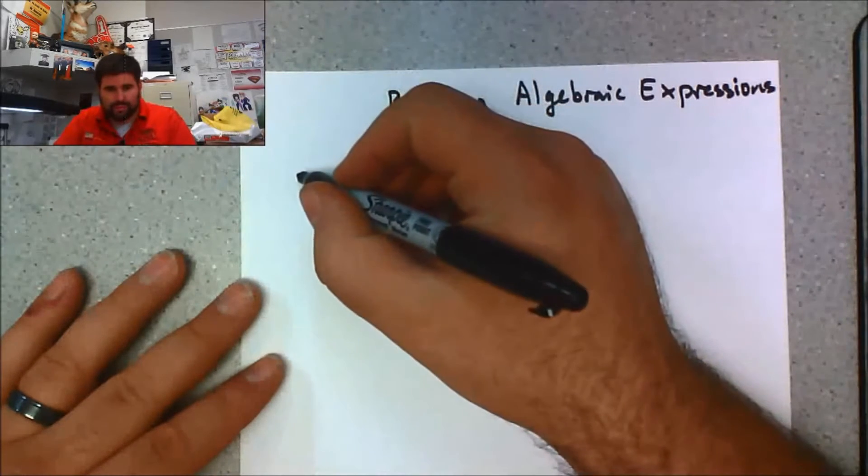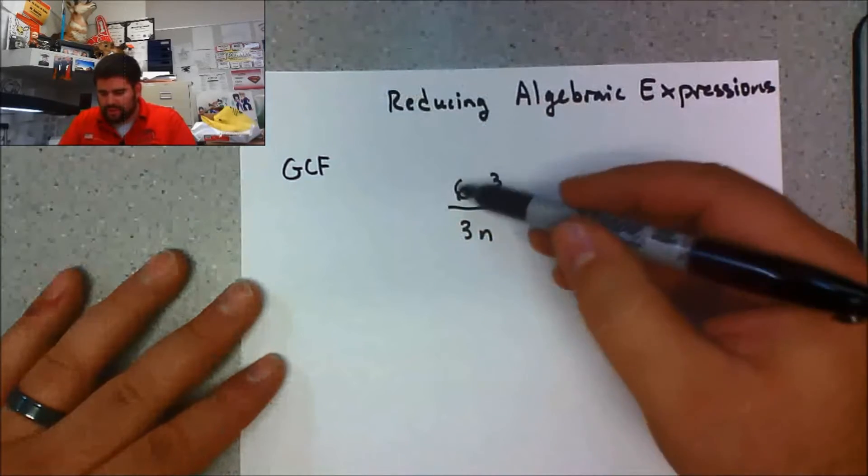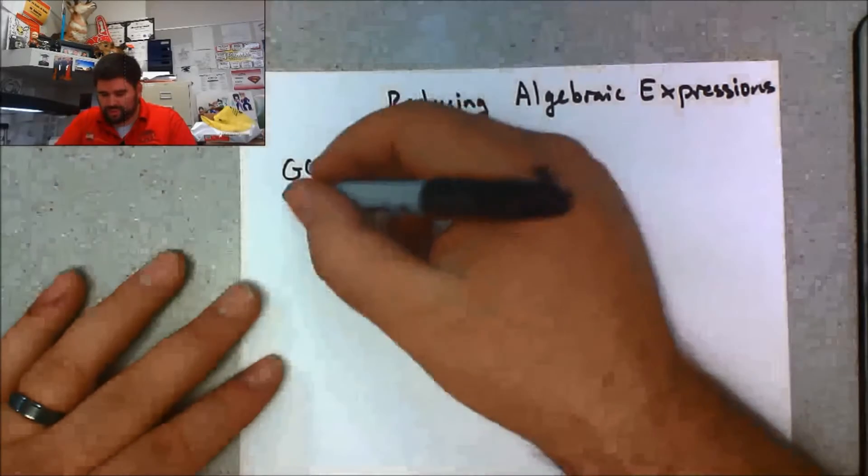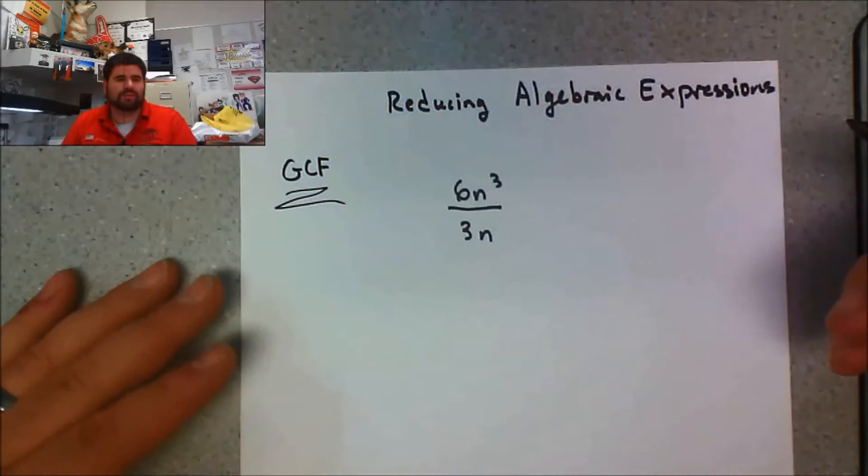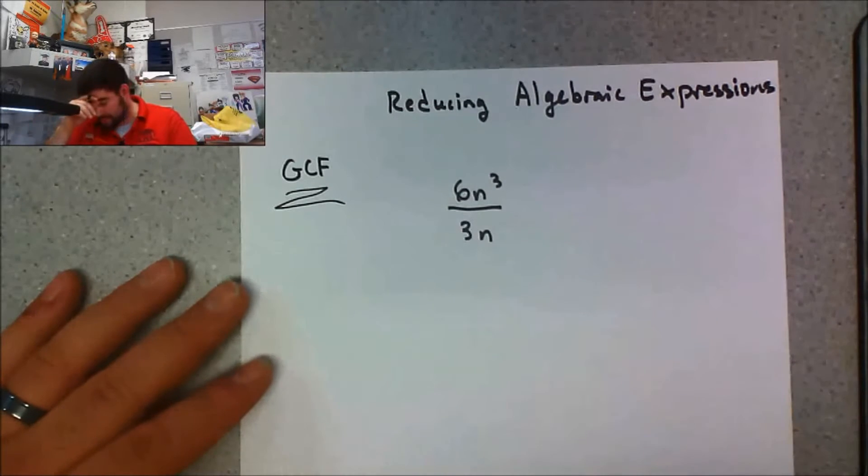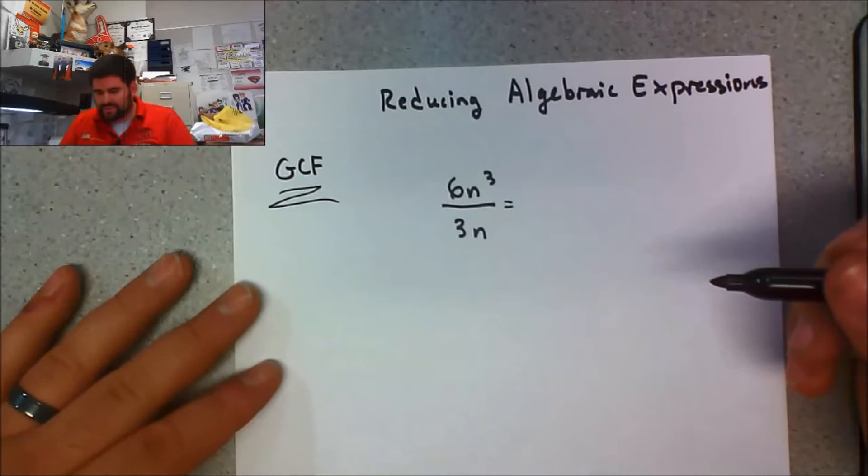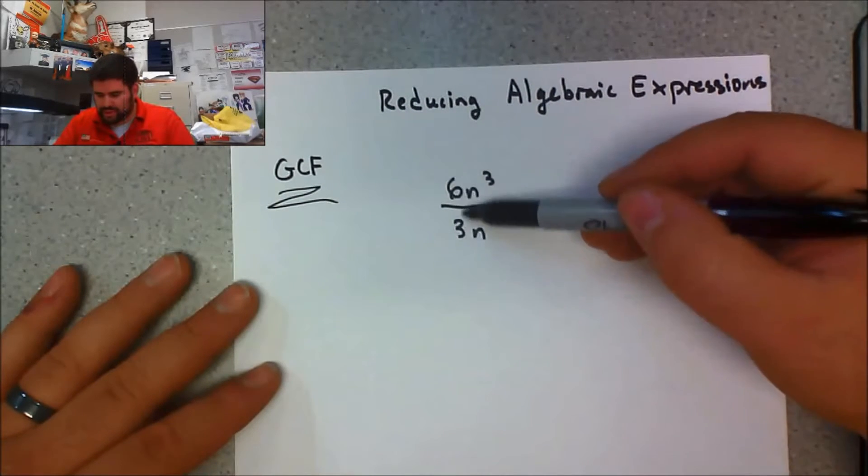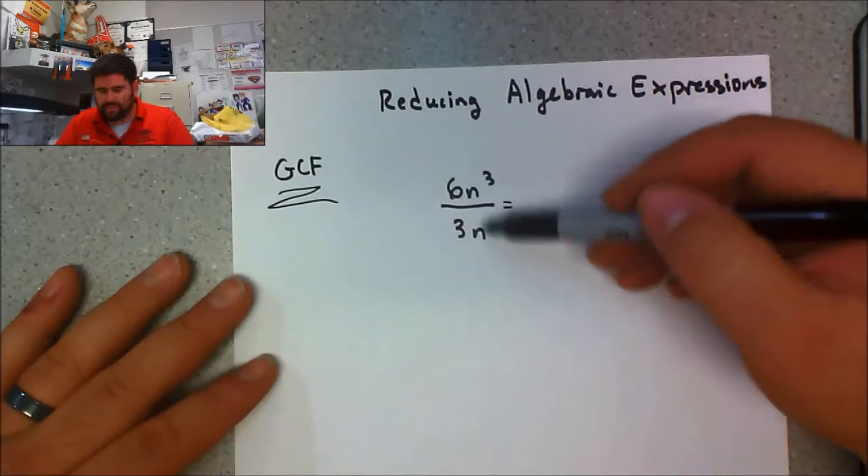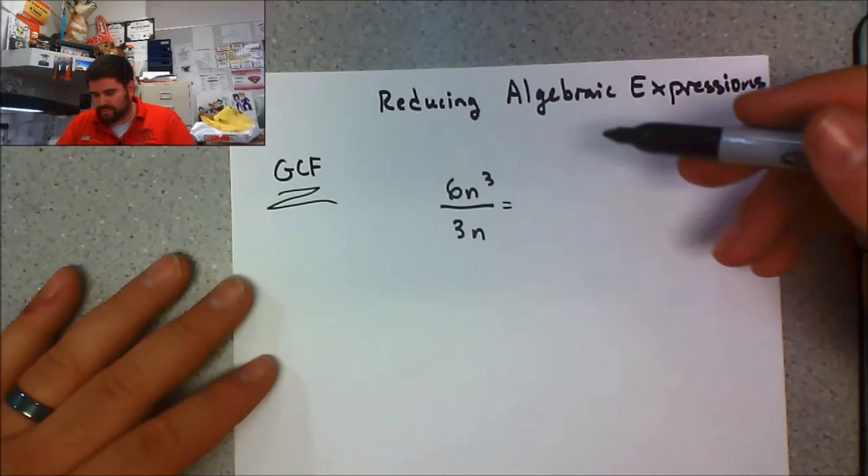What I tell my students is that the GCF of the numbers in the expression is really important to think about. So let's take a look at this. I have my students ask themselves: what's the GCF of these two numbers here, and we'll worry about the variables later.